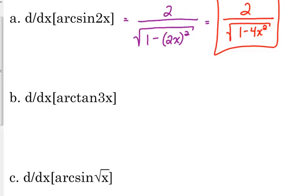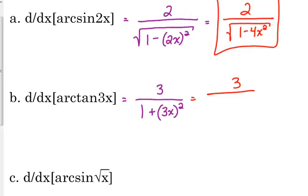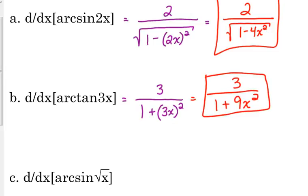The derivative of the arc tangent of 3x: our arc tangent rule puts the derivative of the angle on top, so 3 goes on top, and it's over 1 plus u squared, u being the angle 3x, so over 1 plus (3x) squared. Simplifying, that's 3 over 1 plus 9x squared. You cannot simplify the 3 and the 9 because of that 1 — if that 1 were a multiple of 3, then yes, but it is not, so that is it.